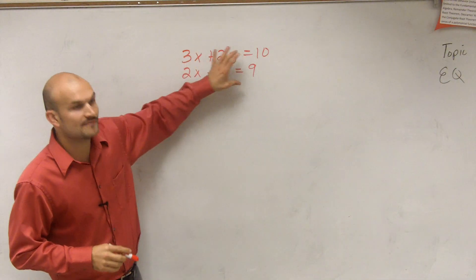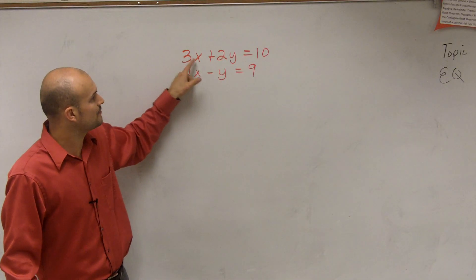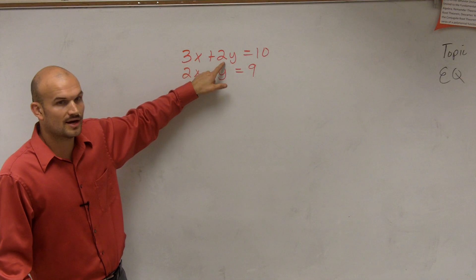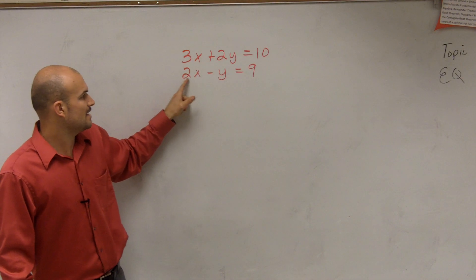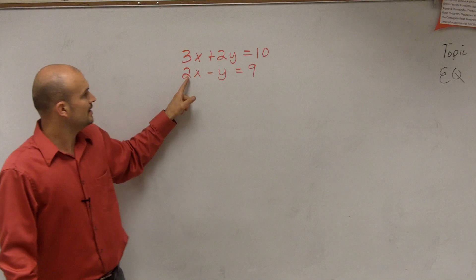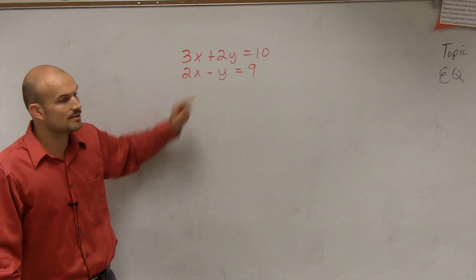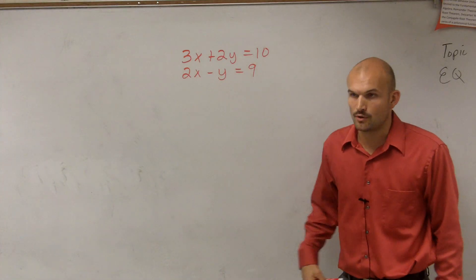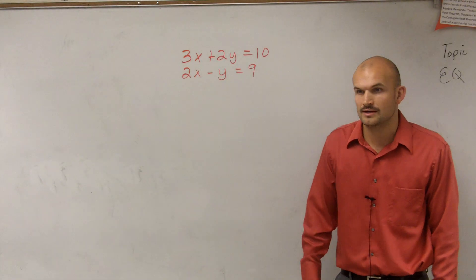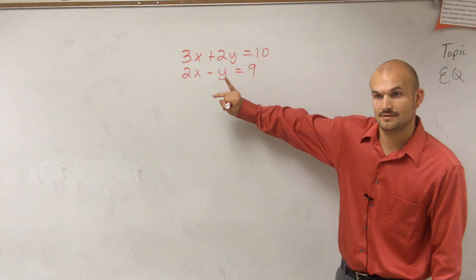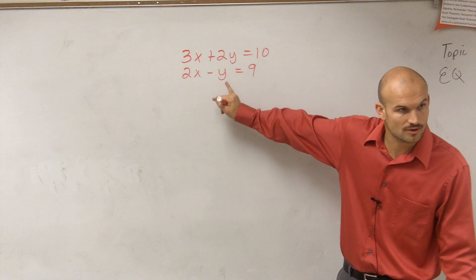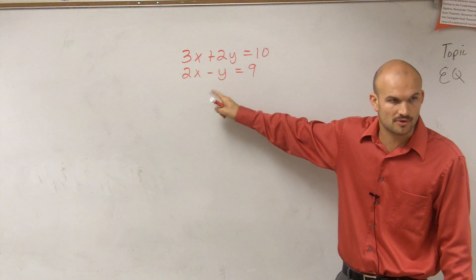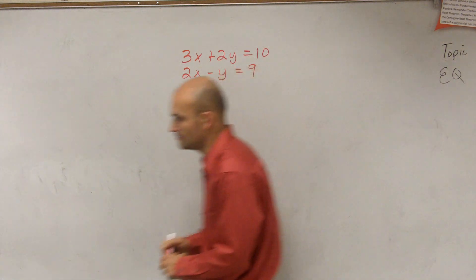I have two equations here. The first is 3x plus 2y equals 10 — x has a coefficient of 3, y has a coefficient of 2. The second is 2x minus y equals 9 — x has a coefficient of 2, and y has a coefficient of negative 1. So the only variable that has a coefficient of 1 or negative 1 is y.